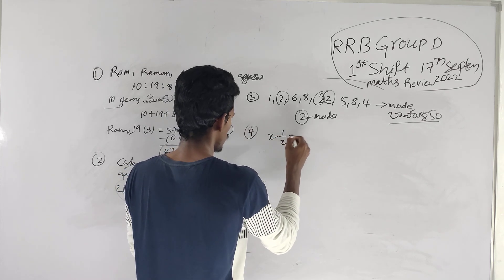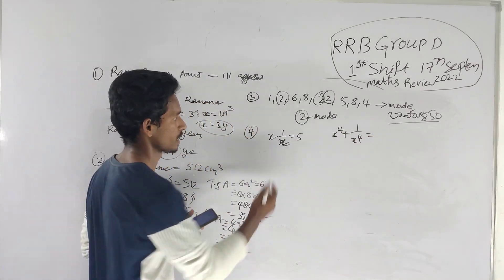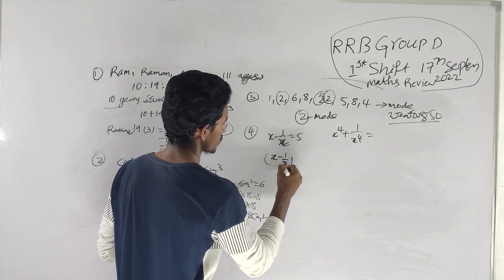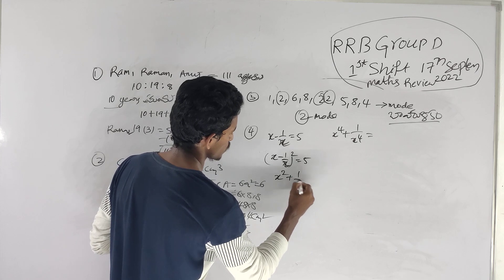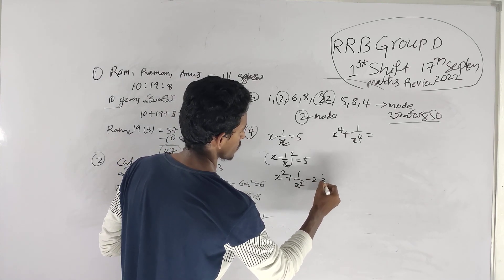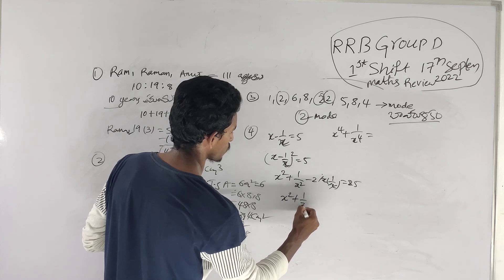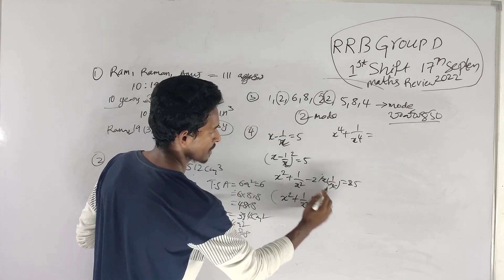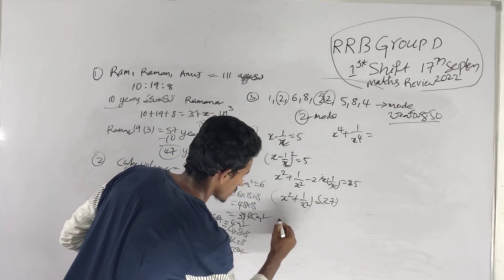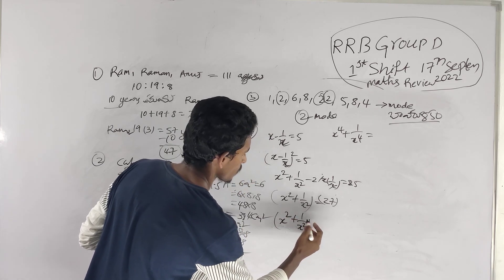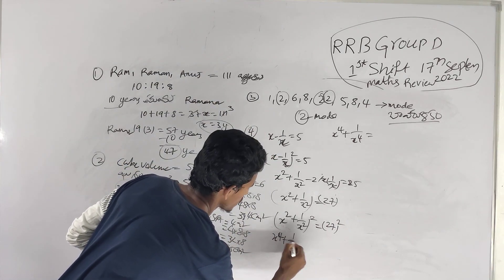Very important: x minus 1 by x is equal to 5. We need to find x to the power 4 plus 1 by x to the power 4. First, square both sides: (x − 1/x)² = 25. Expanding using (a−b)² gives x² + 1/x² − 2 = 25, so x² + 1/x² = 27.